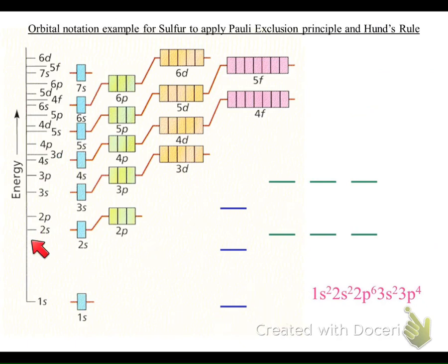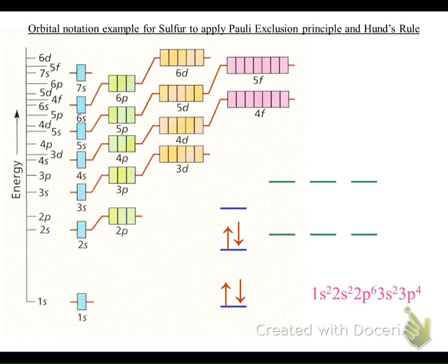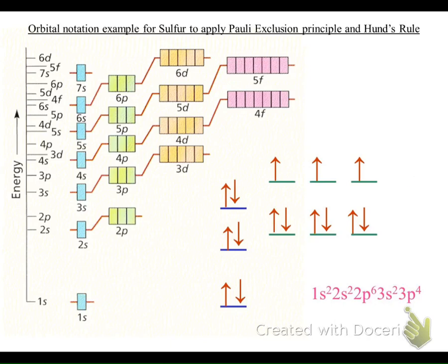For sulfur, applying both the Pauli Exclusion Principle — filling the lowest energy level first — and Hund's Rule — living alone first: fill 1s with up and down, 2s with up and down. For 2p, write three up arrows first, then pair them all with down arrows since there are six electrons. Fill 3s with up and down, then fill 3p — which has four electrons — with three up arrows first, then pair one up. Practice orbital diagrams more in class.